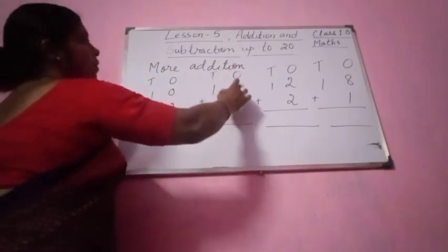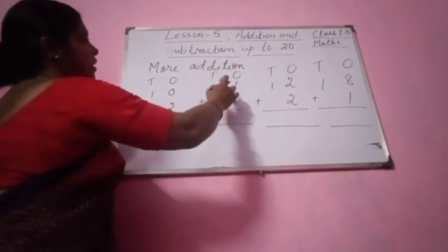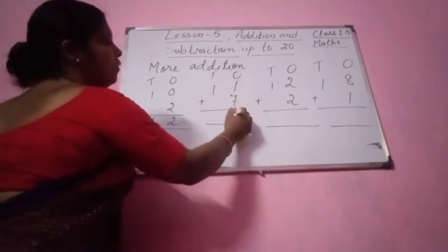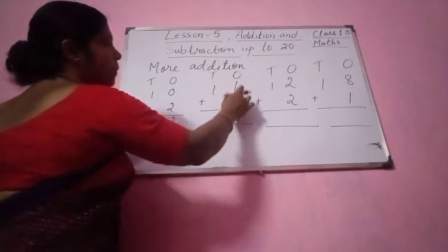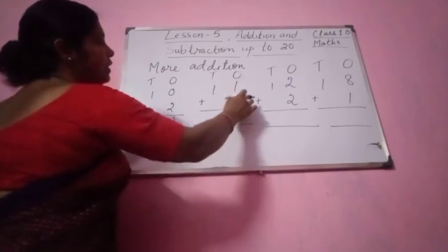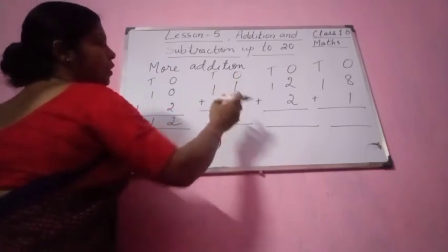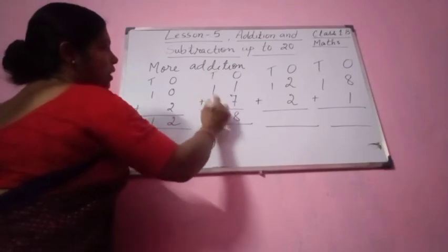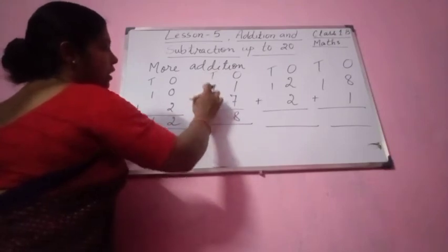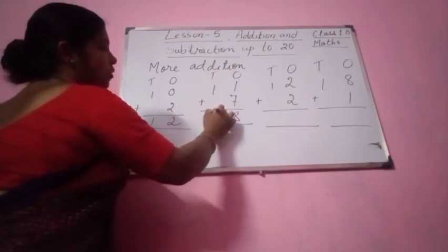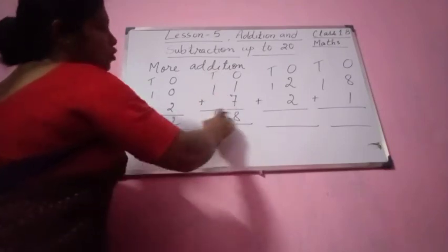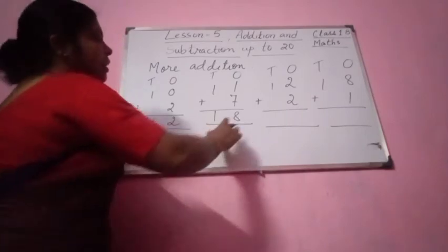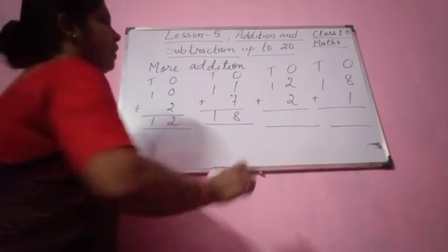Next one: again one sentence is written here. 1 plus 7 equal to how much? 8. 1 plus 7 equal to 8. And 1 will come down because underneath 1 there is nothing. So 18 — the answer is 18 — 1 ten and 8 ones.